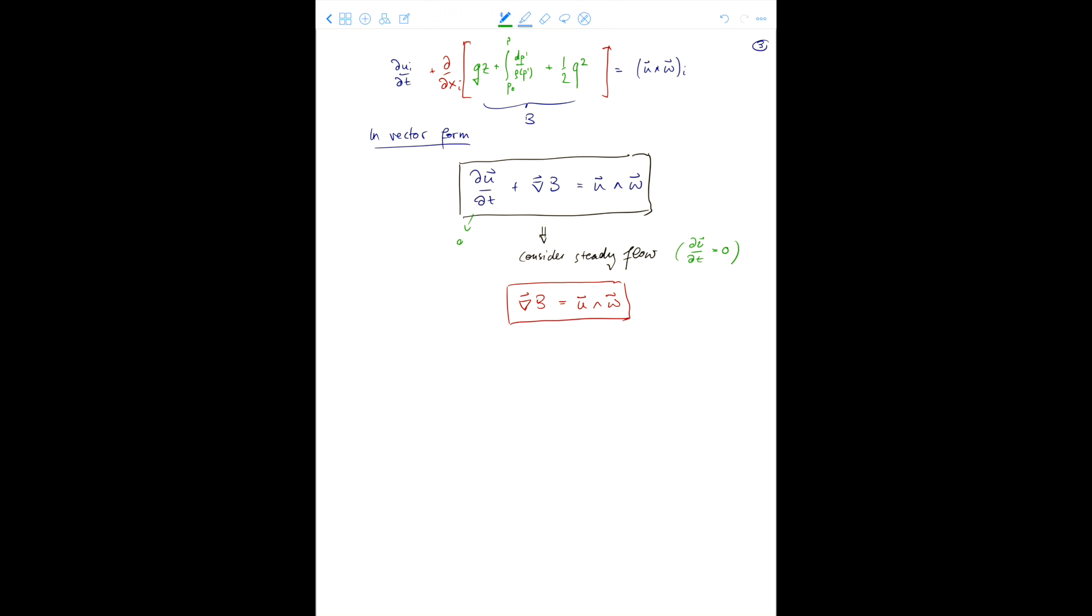That means that the left-hand side here, that is a vector that is perpendicular to the constant b surface. Vector perpendicular. Now, the streamlines are determined by the direction of u. So the streamlines are tangent to u. And the vortex lines are tangent to omega. So, a vector that is tangent to u and tangent to omega, if we take the cross product of those two, we must get a vector on the right-hand side that is perpendicular to the streamlines and the vortex lines.